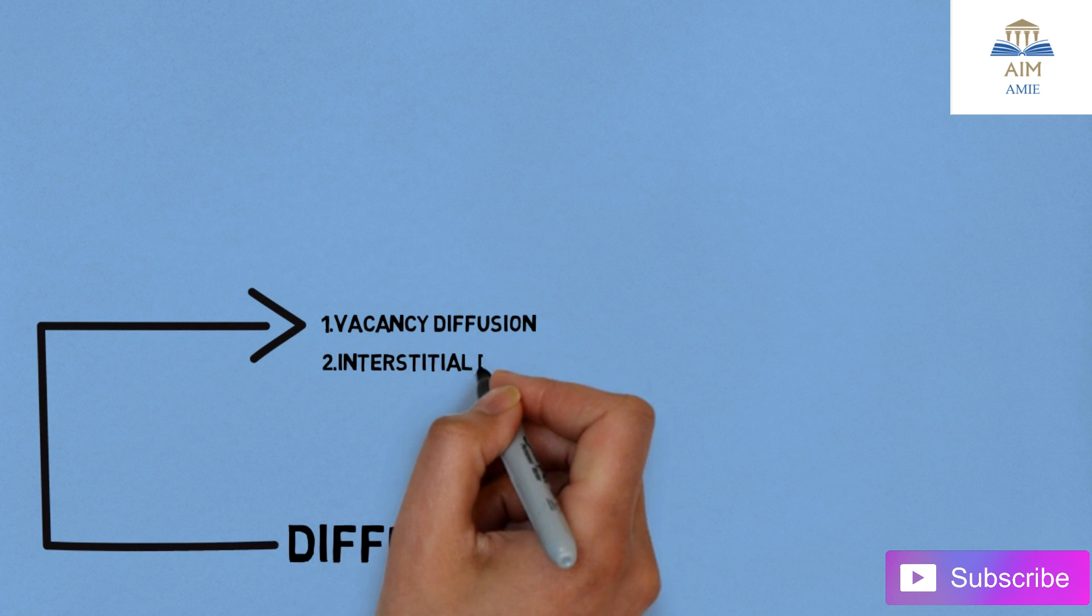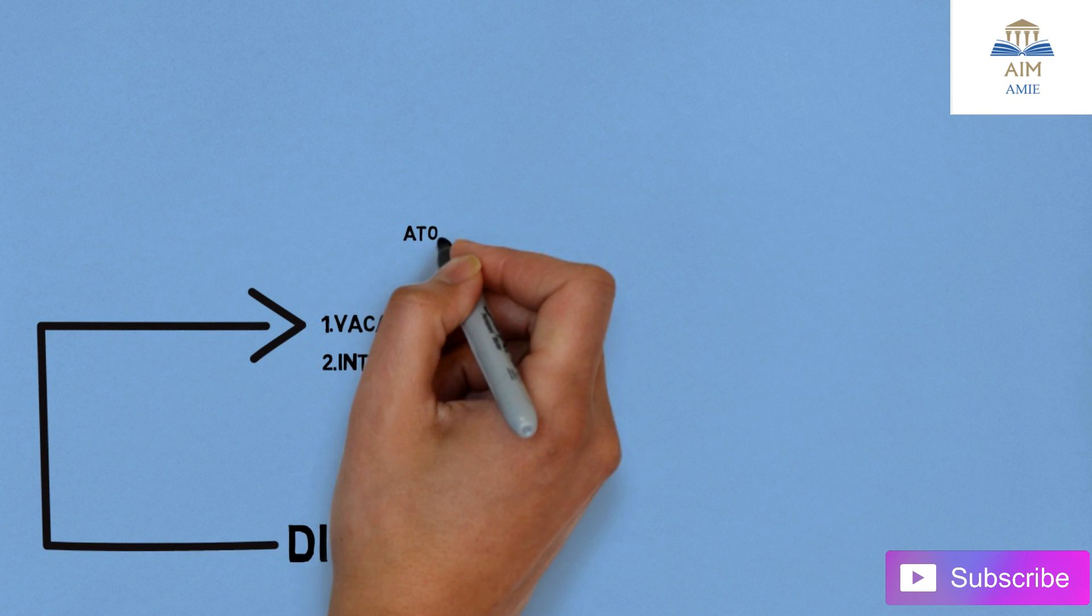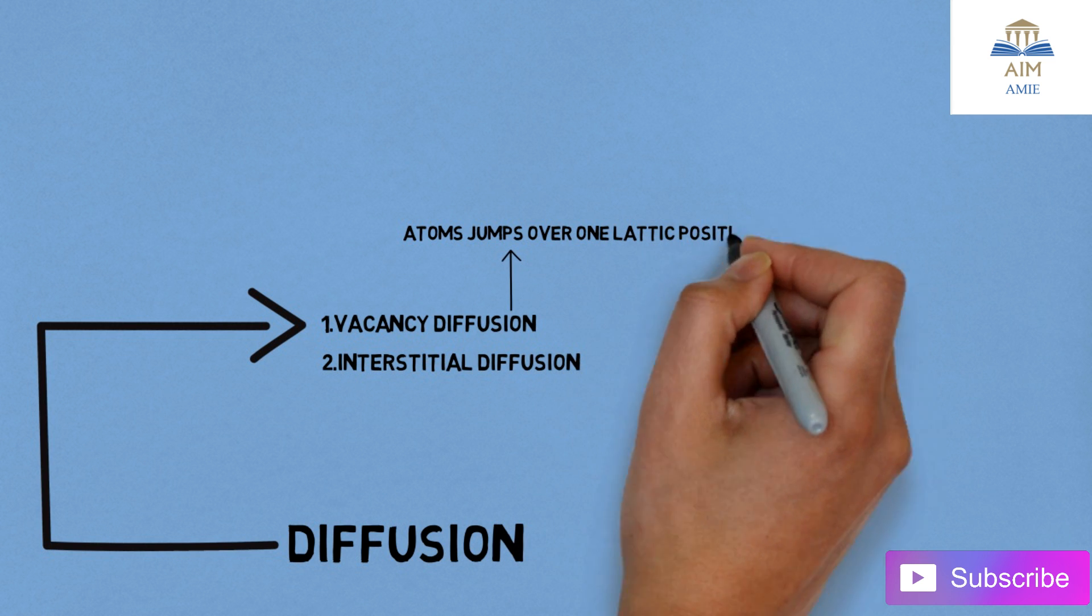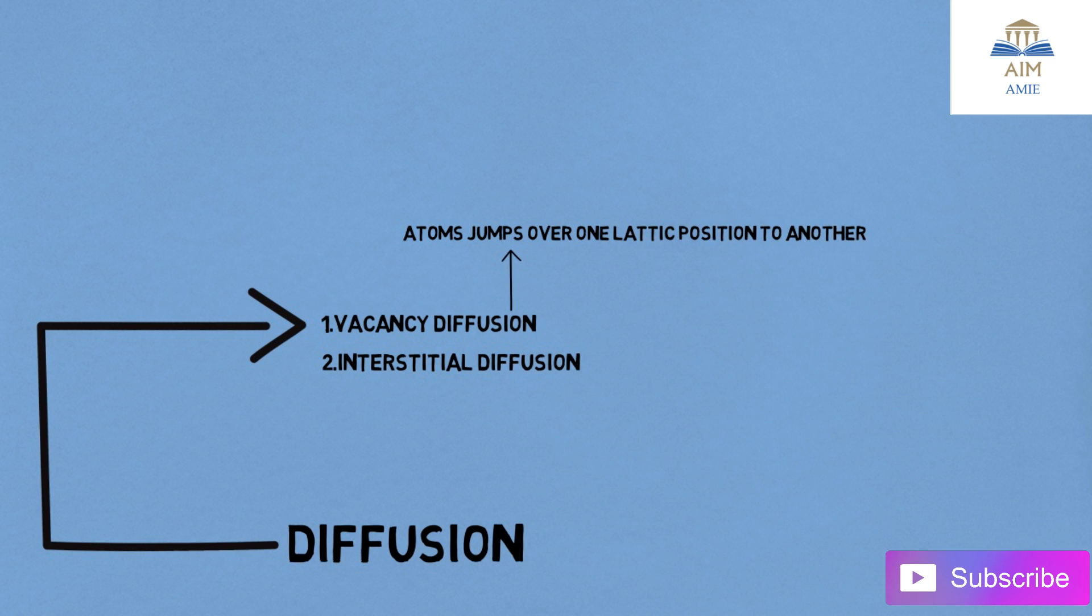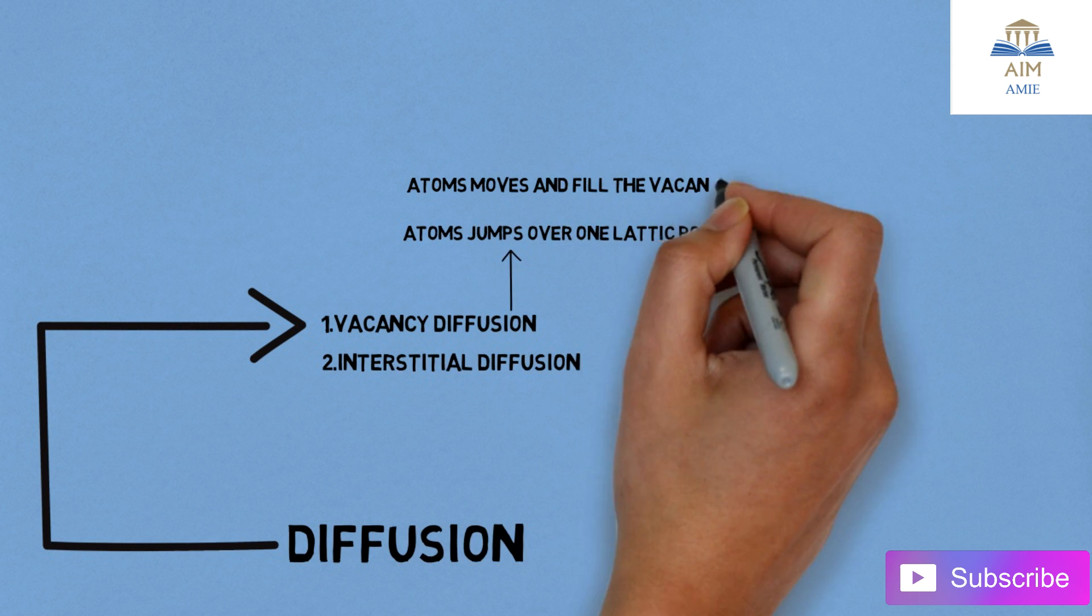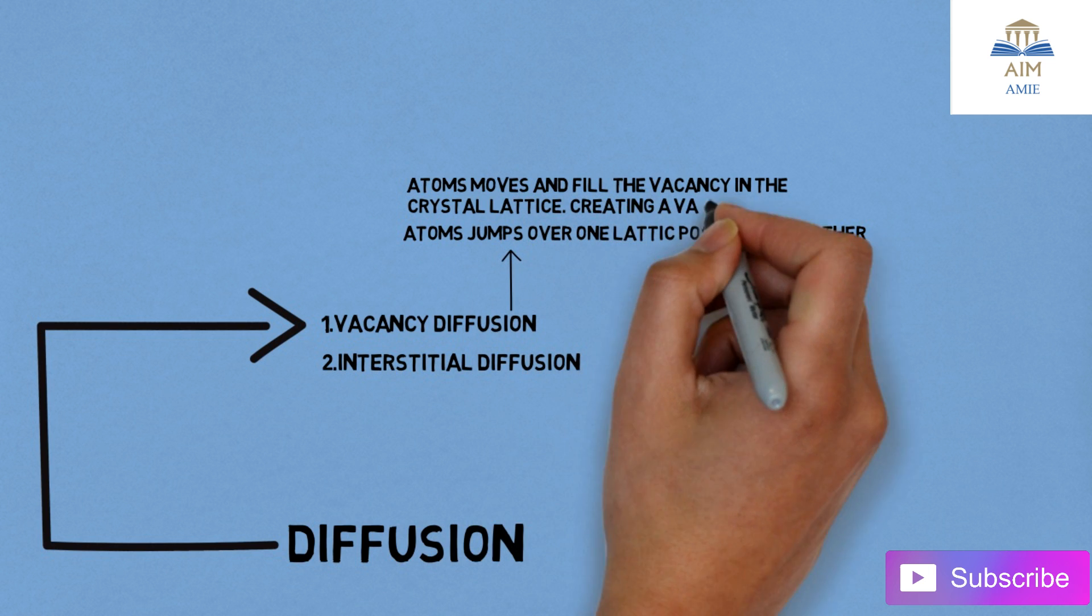Vacancy diffusion: the atoms jump from one lattice position to another lattice position. Atoms move and fill the vacancy in the crystal structure. The vacancy will always be there, creating a vacancy behind.